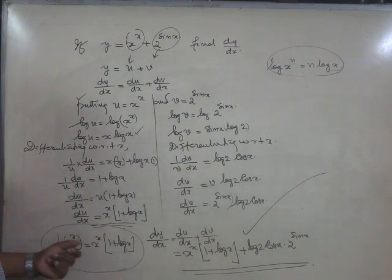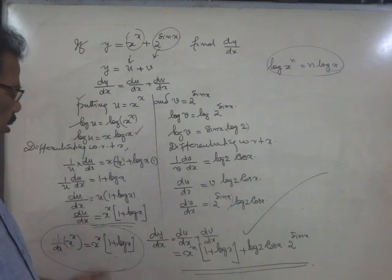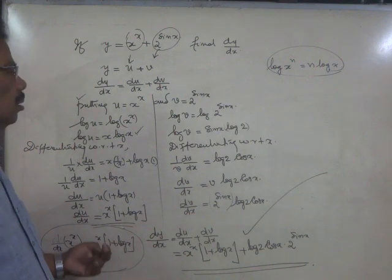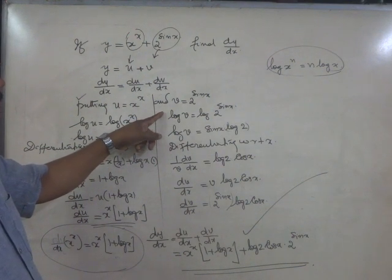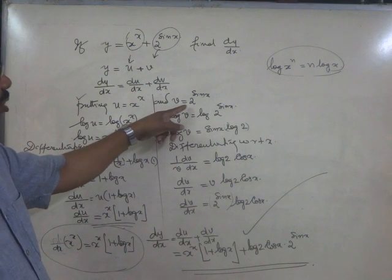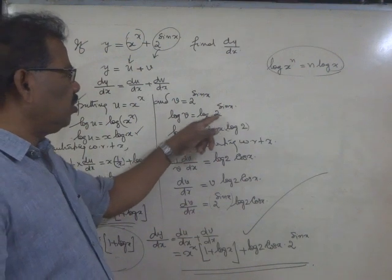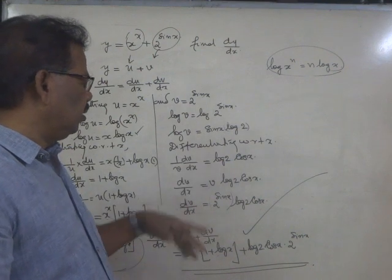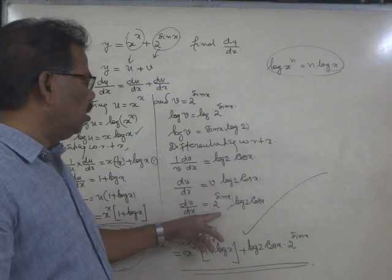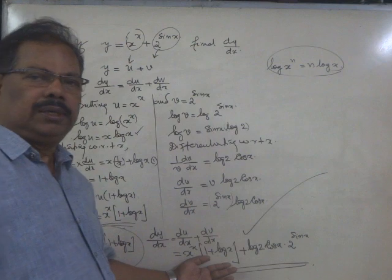Study this as an identity: derivative of x raise to x with respect to x is x raise to x into 1 plus log x — better you study it by heart. And regarding v: v equals 2 raise to sin x, log v equals sin x times log 2. On differentiation, you got the result 2 raise to sin x times log 2 times cos x. Adding these two, you got the necessary result.